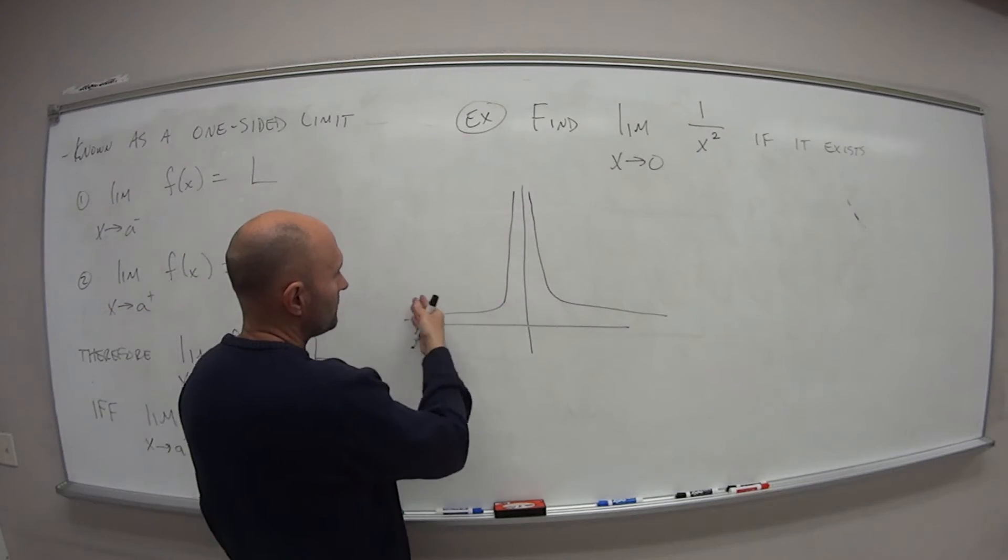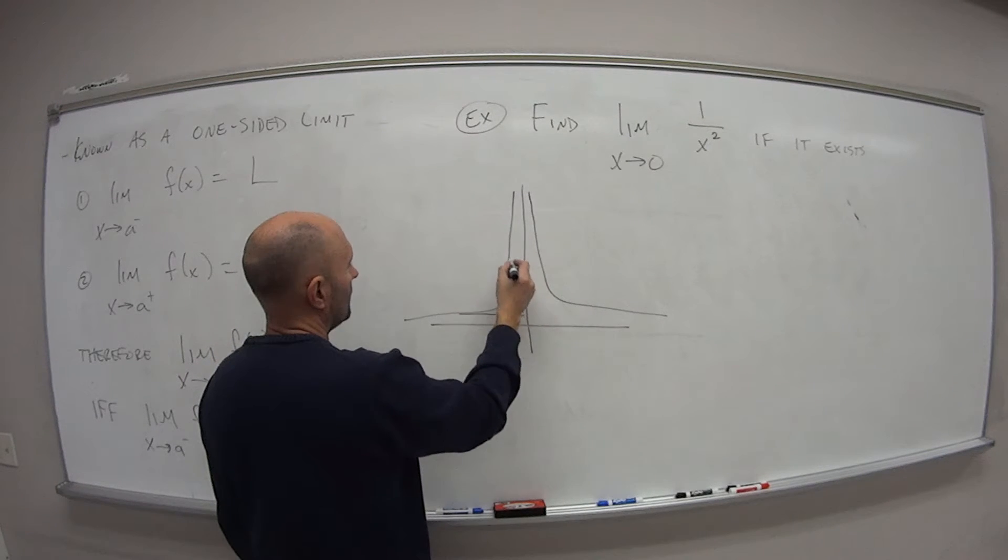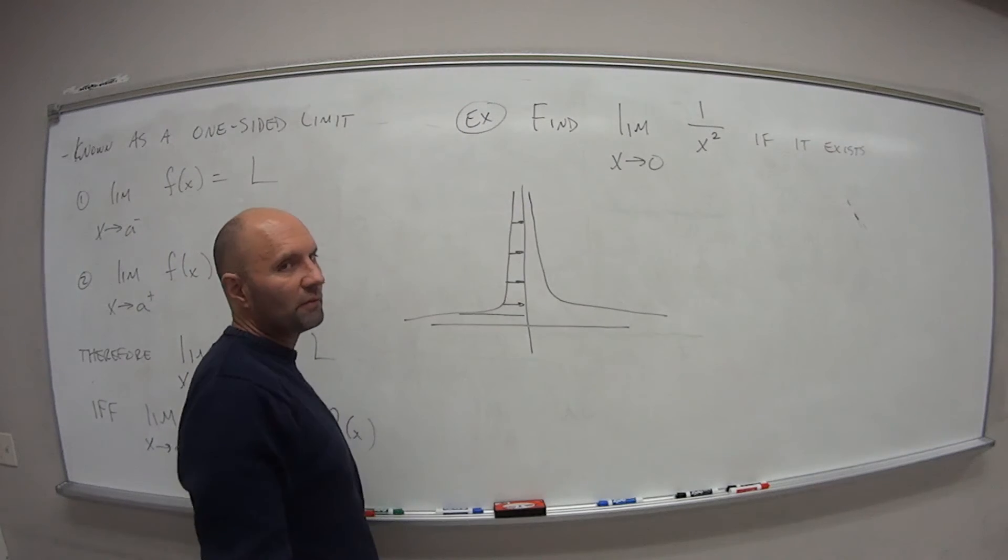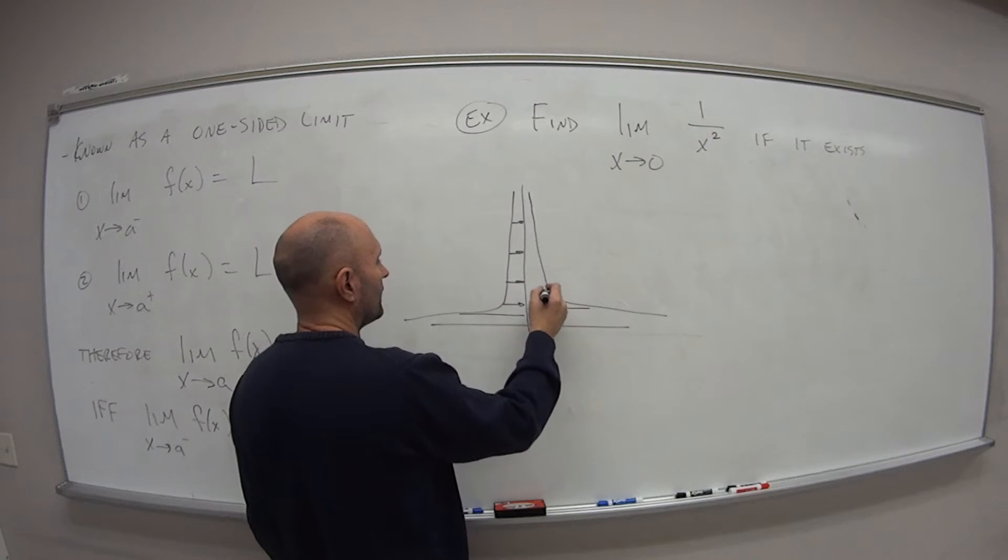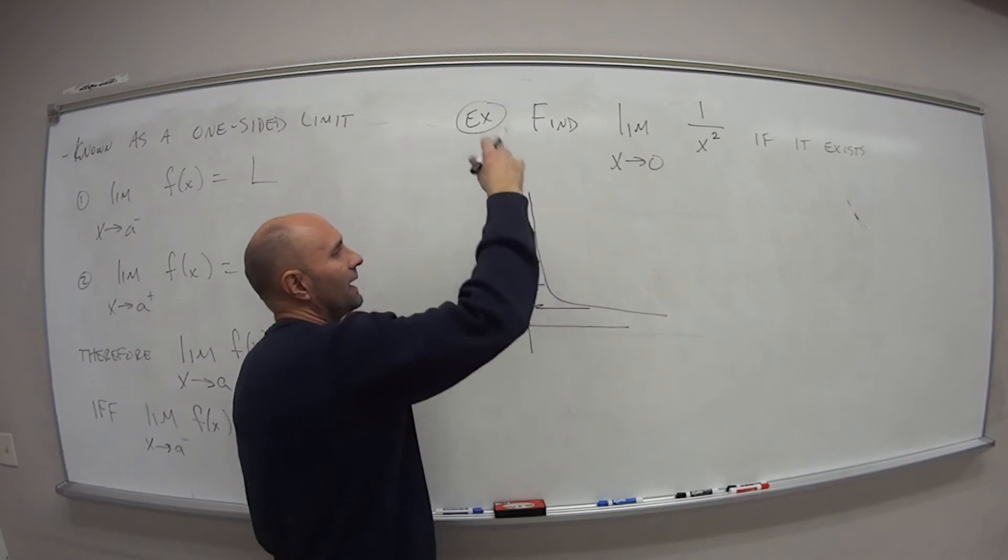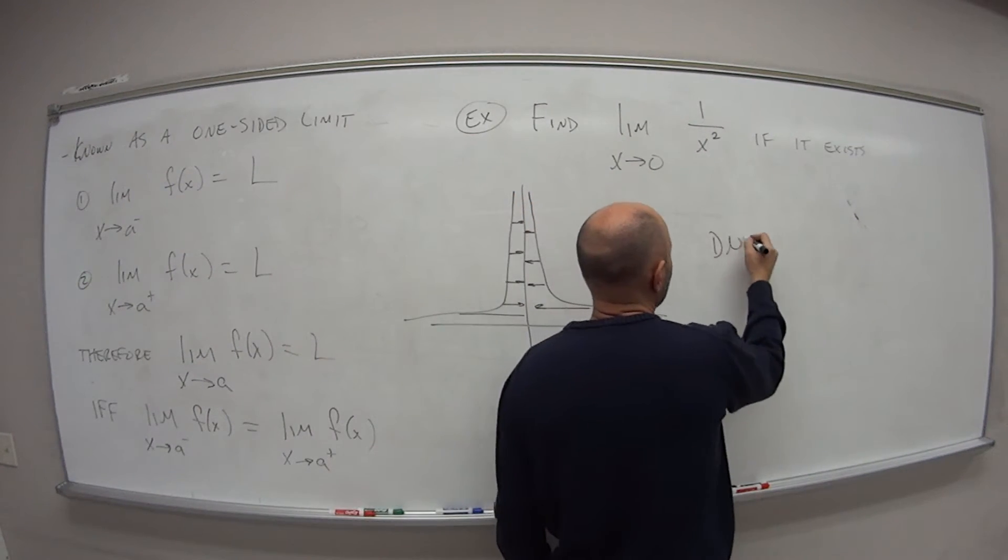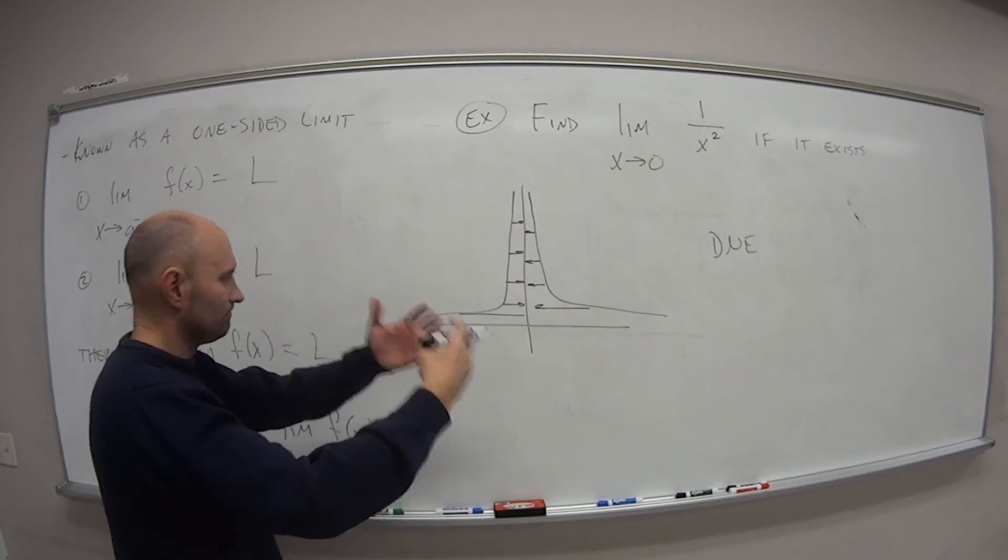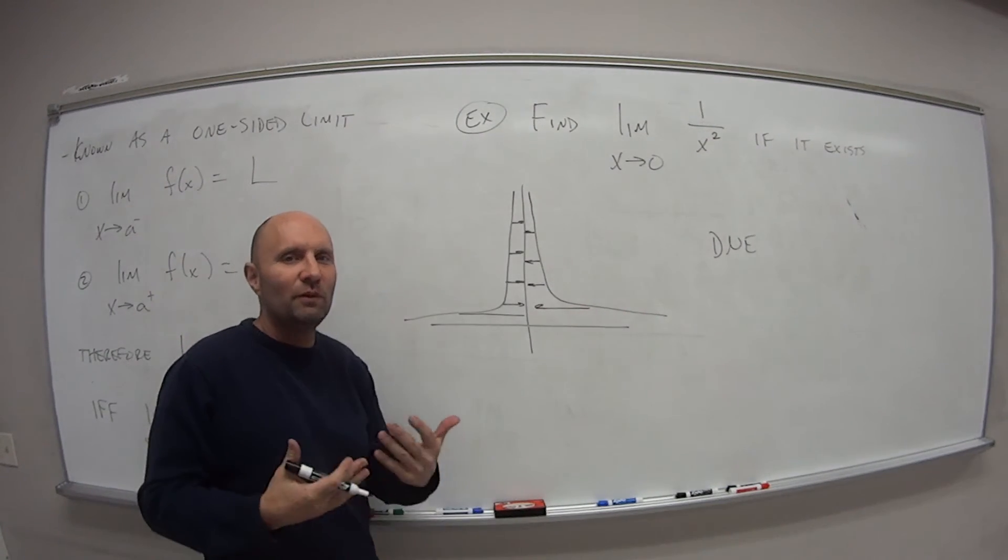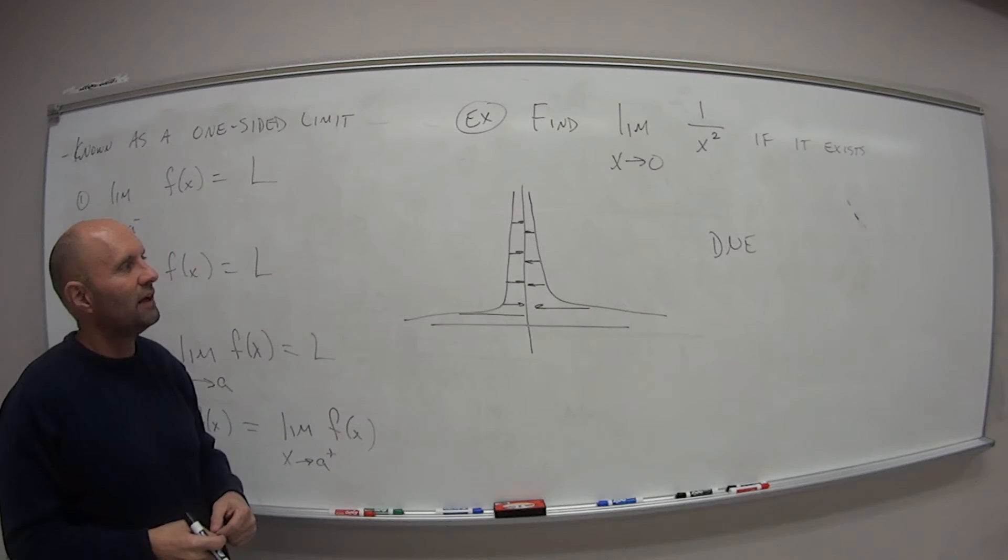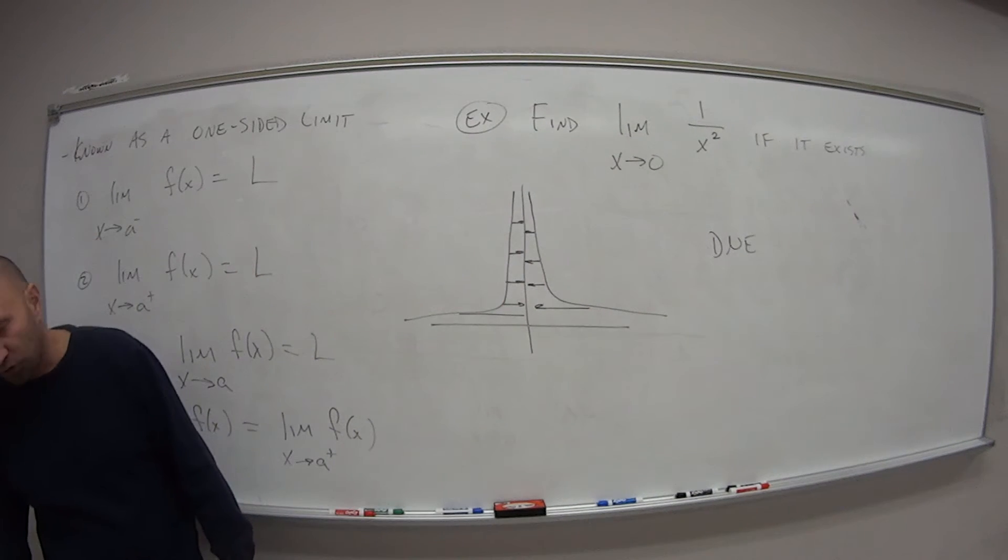So as I approach 0 from the left-hand side, where is it going? It's going up to positive infinity. It's not going to any specific number. As I approach from the right-hand side, where am I going? It's going again up to positive infinity. It's not going to any specific value. So because I cannot say, oh, this is equal to 1 or this is equal to 0 or this is equal to some specific value, because it's just going to infinity, we say that the limit does not exist. It doesn't have a value that it goes to because they're both going to go to infinity. They never actually come to a certain value.